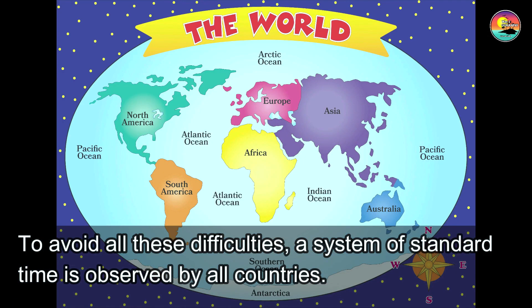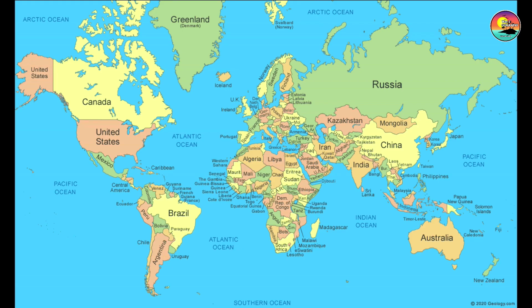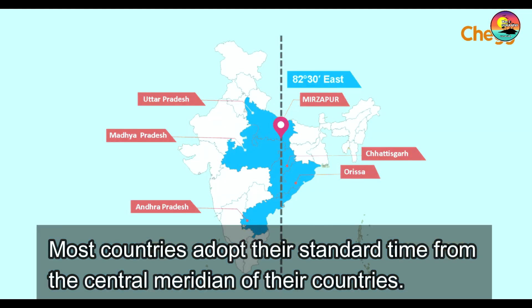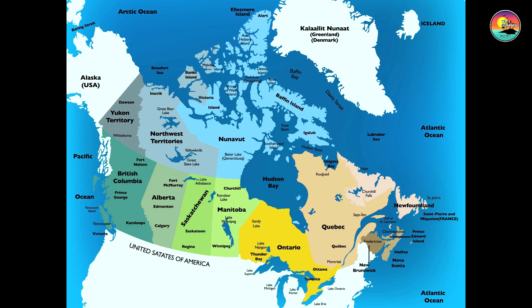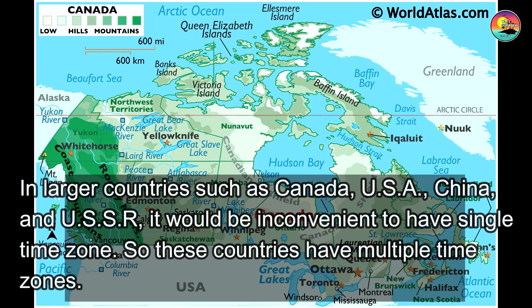A system of standard time is observed by all countries. Most countries adopt a standard time from their central meridian. For larger countries such as Canada, USA, and China, it would be inconvenient to have a single time zone, so these countries have multiple time zones.